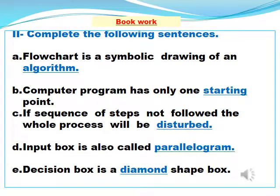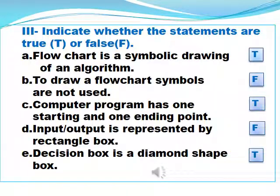After the explanation, let's start the book work. Complete the following sentences on page number 32: A. A flowchart is a symbolic drawing of an algorithm. B. Computer program has only one starting point. C. If the sequence of steps is not followed, the whole process will be disturbed. D. Input box is also called parallelogram. E. Decision box is a diamond-shaped box.